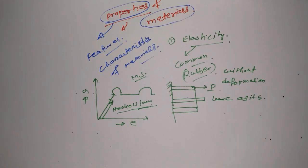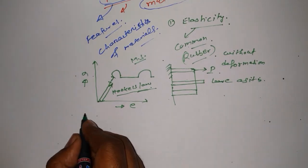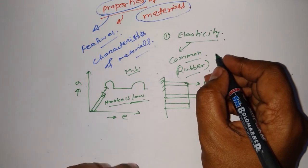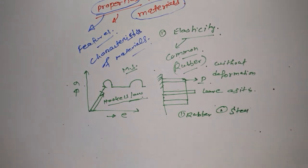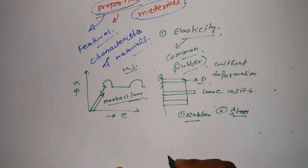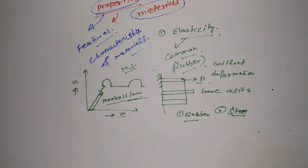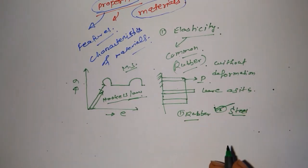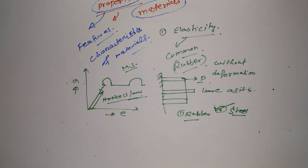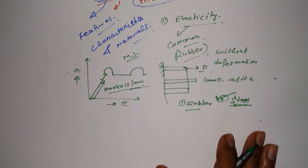Now, regarding elasticity — if you have two materials, rubber and steel, which one is more elastic? Steel is more elastic, because how much time the material takes to regain its original position after being released from load is also important. That's why steel is more elastic than rubber.